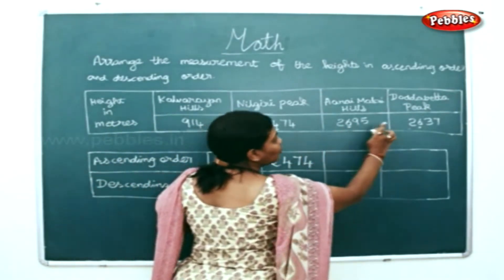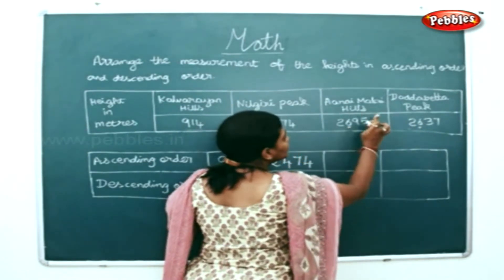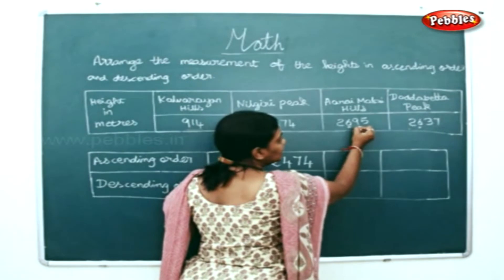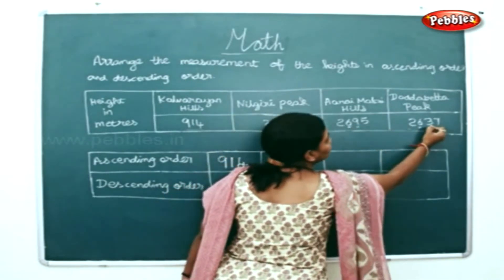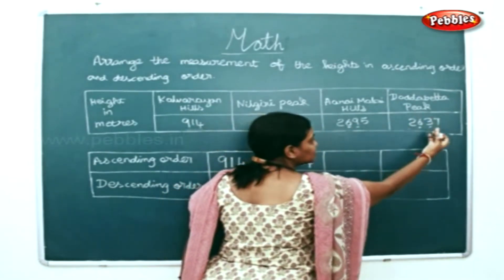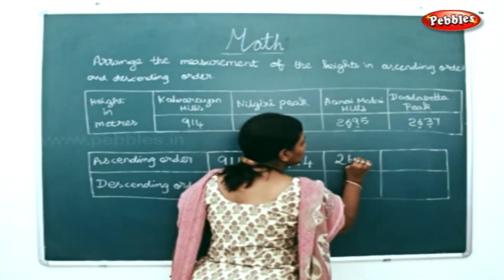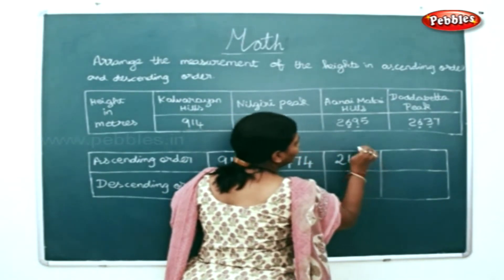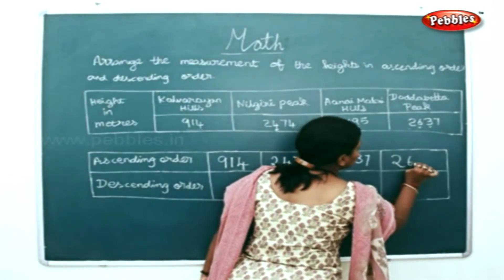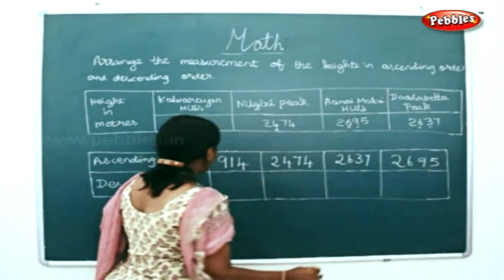Next, since both Annamalai and Dodabeta have 6 in the hundreds place, we will compare the tens place. In the tens place, you have a 9 and a 3. Comparing 9 and 3, 3 is the smaller number. So we will write 2,6,3,7 and the greatest of them all is 2,6,9,5.